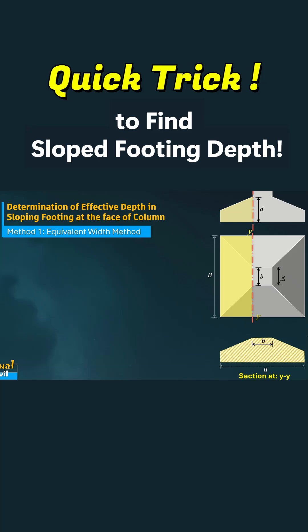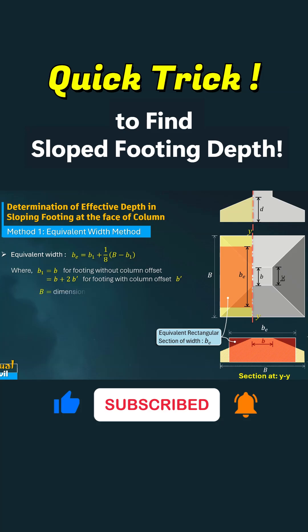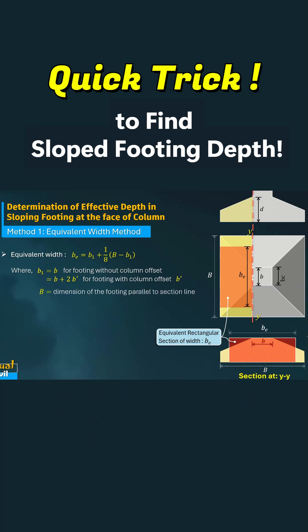In the equivalent width method, we simplify the analysis by replacing the trapezoidal section of the footing with an equivalent rectangular section. This new section has a width denoted as BE, which produces the same moment of inertia as the original trapezoid. To calculate this equivalent width BE, we use the dimensions of both the footing and the column, specifically those parallel to the section line as shown in the equation and figure.